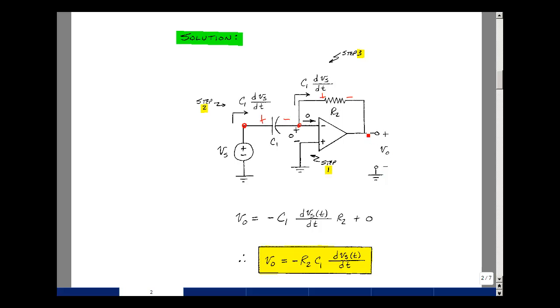So let's solve for V out. The rise in voltage equals the drops around the loop. So V out is equal to minus R2 times C1 dVs dt plus zero. Bring the R2 over here, and I've got that V out is minus R2 C1, derivative of V sub S with respect to T.